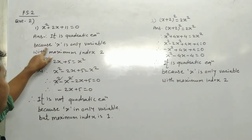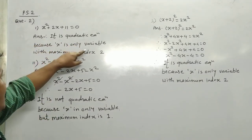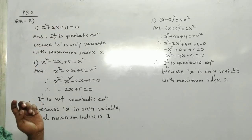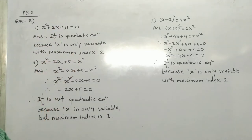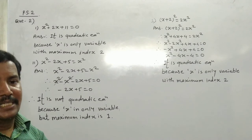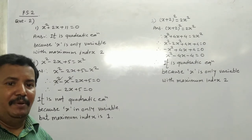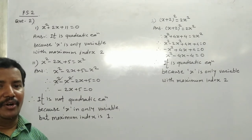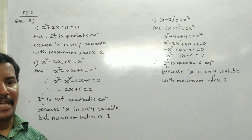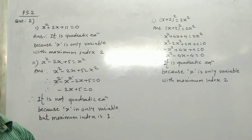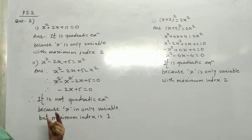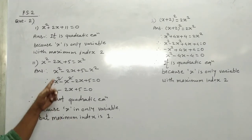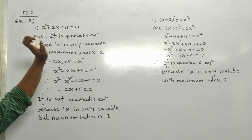This is a quadratic equation because x is the only variable, and that key variable has a maximum index of 2. If the maximum index were 3, it would be cubic. We have linear, quadratic, and cubic classifications, and because the highest degree here is 2, this is a quadratic equation.